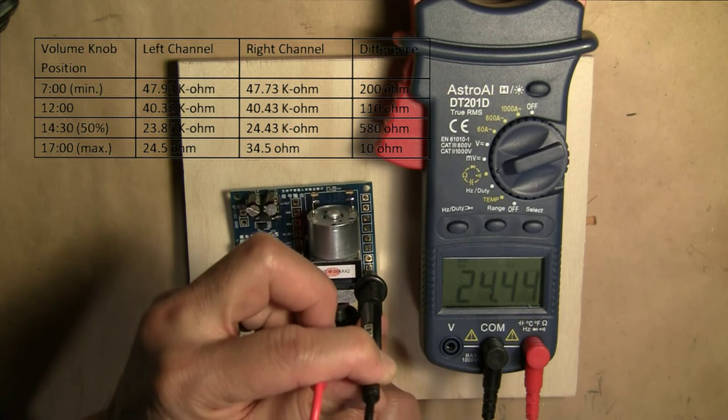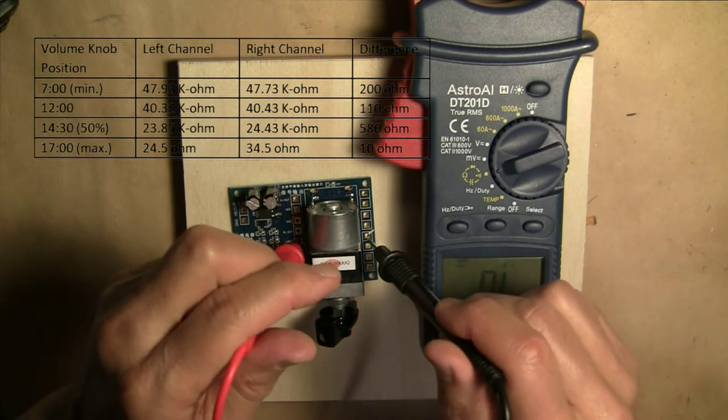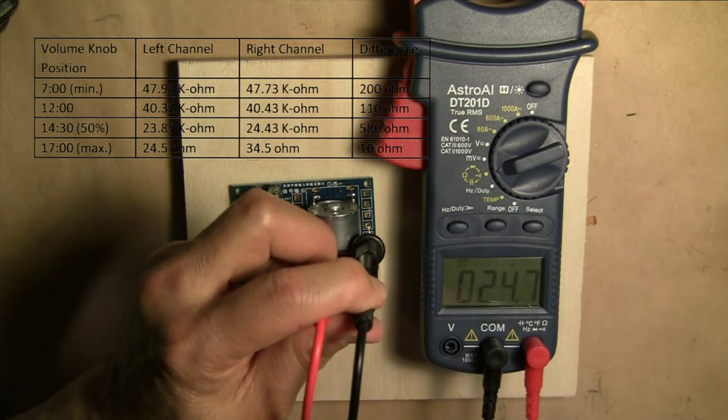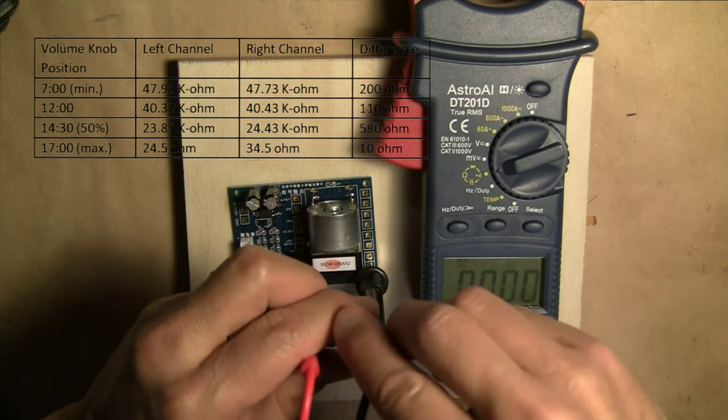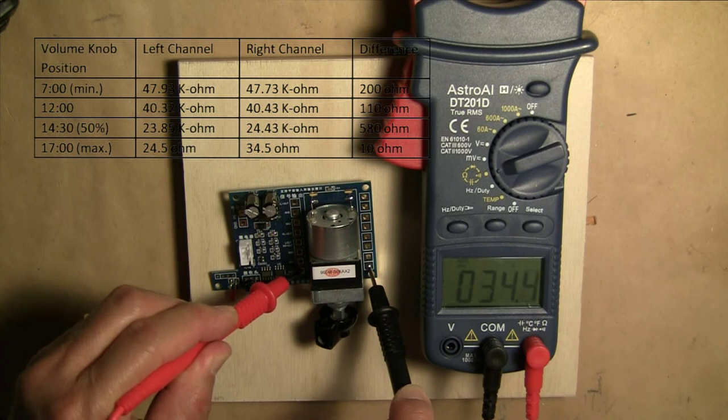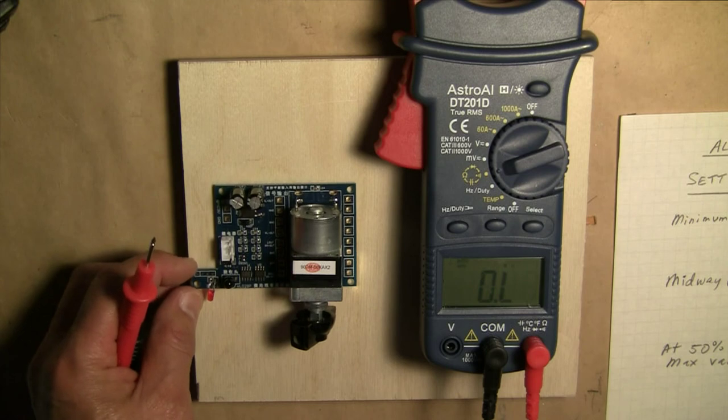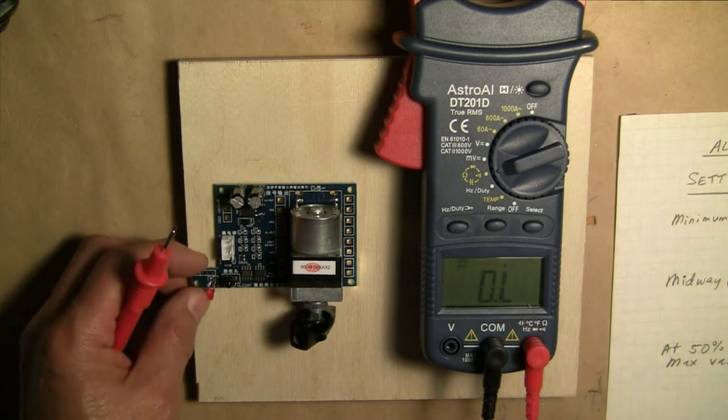At the fully maximum position, which is around 5 o'clock, the left channel resistance is 24.5 ohms. The right channel is 34.5. The left and right resistance track pretty well. And there should be no differences in volume caused by this potentiometer in the left and right channels.